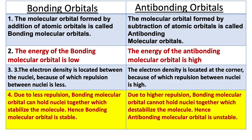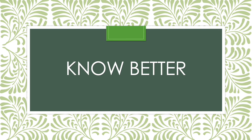In bonding orbitals, due to less repulsion, it can hold the nuclei together, which stabilizes the molecule. Hence, bonding molecular orbital is very stable. Whereas in antibonding molecular orbitals, due to high repulsion, it cannot stabilize the molecule. Hence, antibonding molecular orbital is unstable.